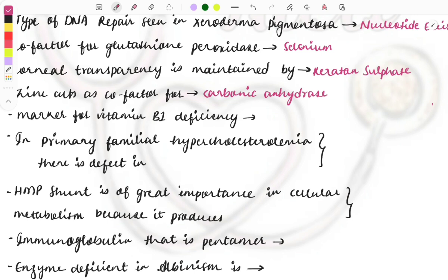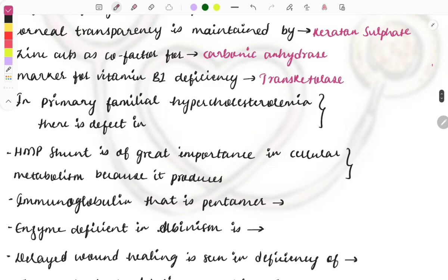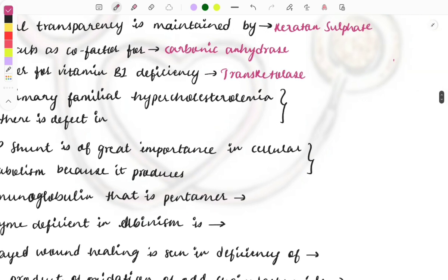Marker for the vitamin B1 deficiency is the transketolase. Then the next question, in familial or primary familial hypercholesterolemia, there is defect in which substance? It is the apolipoprotein B.